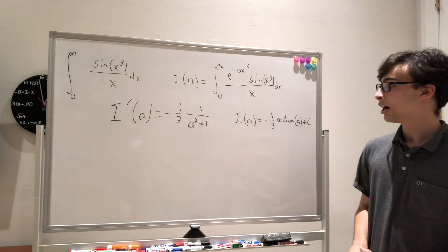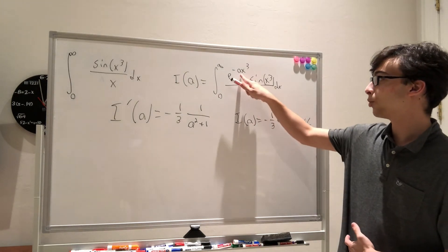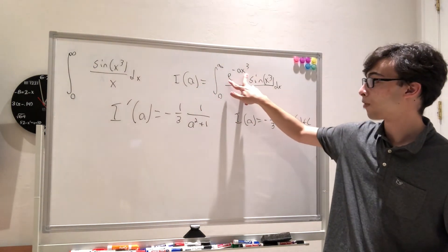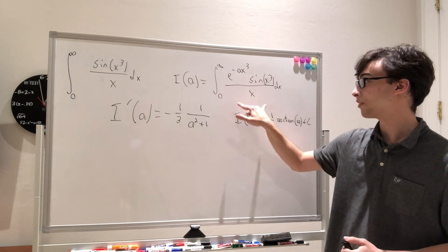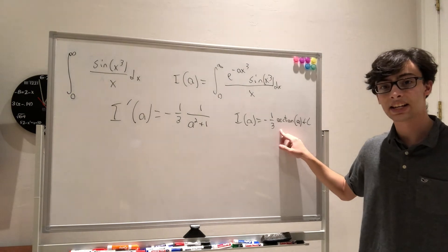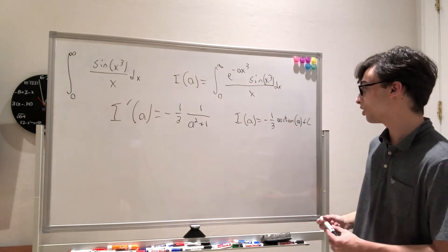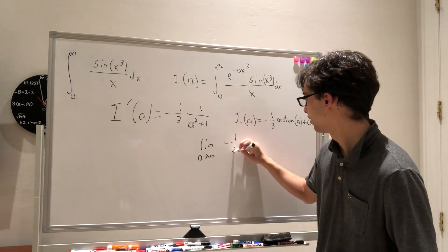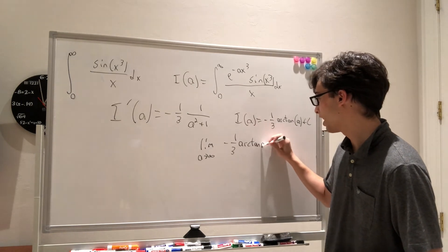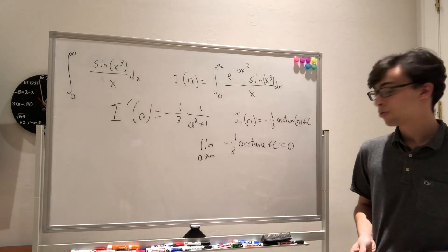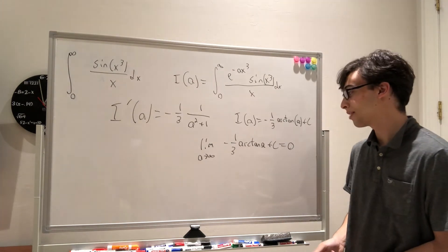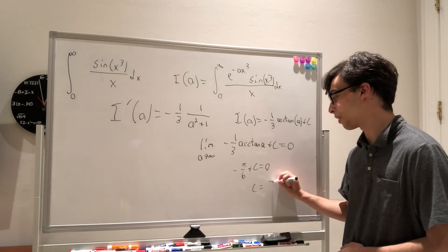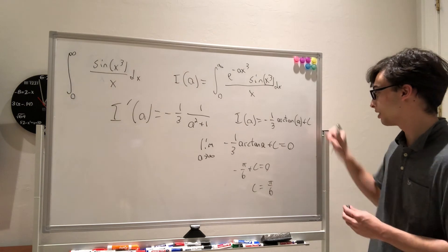If you're clever enough, you realize that as a goes to infinity, the limit of I of a is going to be 0, because the exponential term e to the negative a x cubed gets smaller and smaller. So the limit as a goes to infinity of negative one-third arctangent of a plus C must equal 0. As a goes to infinity, arctangent goes to pi over 2, so we have negative pi over 6 plus C equals 0, which means C equals pi over 6.